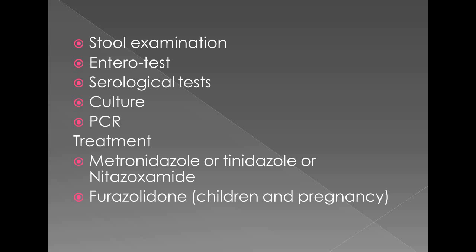The Entero test is specific for Giardia. In this test, a capsule with an attached string is swallowed by the patient. The capsule dissolves in the stomach and duodenum, while the string is taped to the cheek. After 30 minutes to one hour, the string is removed, containing duodenal contents. This is mixed in saline and a wet mount is prepared to see trophozoites and cysts of Giardia.